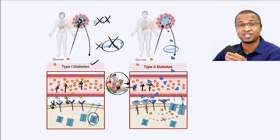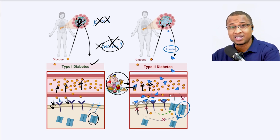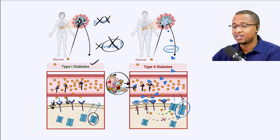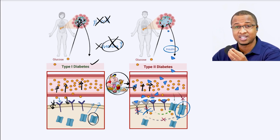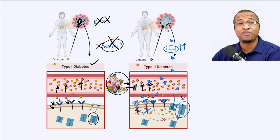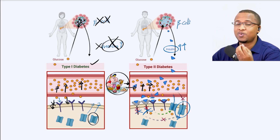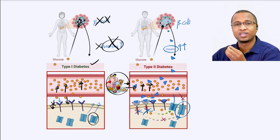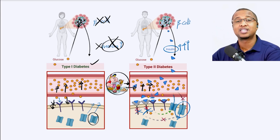Insulin will come and attach to the insulin receptors, the transporters will come and take glucose inside the cell. Now if we keep doing that for a long time, these cells will start to resist insulin. When insulin comes and attaches, nothing will happen. If insulin is not working well — what we call insulin resistance — your pancreas has to work even harder to release more insulin so that it can put glucose inside by force. These beta cells will basically have to overwork. But with time, after years of overworking, some of these beta cells will also start to die and some will become dysfunctional.